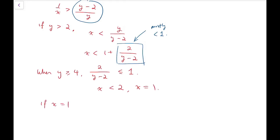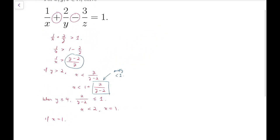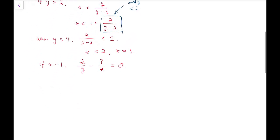Now if x is equal to 1, then we put it back into the original equation. We will have 2 over y minus 3 over z equals 0.